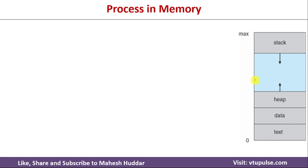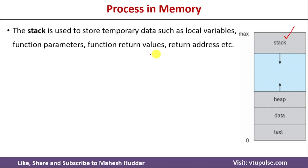Whenever you load a program into primary memory, it will be allocated some space, and the process memory will be divided into different parts. The first part is the stack memory. The stack memory is used to store temporary data such as local variables, function parameters, return values, and return addresses.